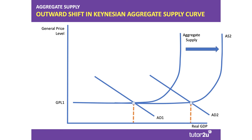If you can improve your infrastructure — if you can add to your stock of capital and have better power and telecoms networks, for example — then in theory the long run aggregate supply curve shown here in a Keynesian model will shift out to the right to AS2. That allows a country to operate with a higher level of aggregate demand consistent with keeping prices and inflation stable.